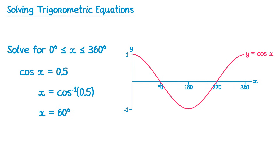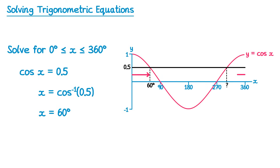So one of the solutions is 60 degrees. Let's use the graph to find the other one — we're trying to find when cos of x equals 0.5, so we mark 0.5 on the axis and draw a horizontal line, finding two intersections. The one we've already got is 60 degrees, and there's one on the right-hand side as well. From 0 to 60 is 60 degrees, so that same distance from 360 back gives us 360 take away 60, which is 300 degrees. So we have two solutions: 60 degrees and 300 degrees.